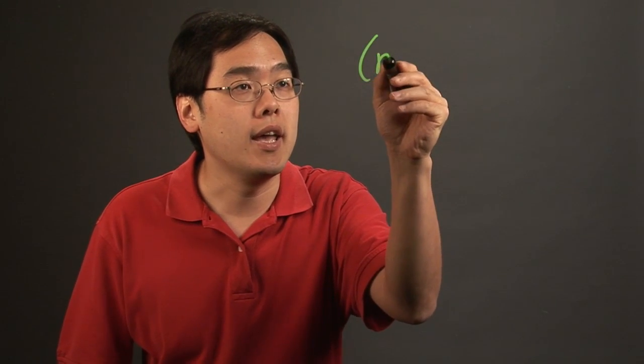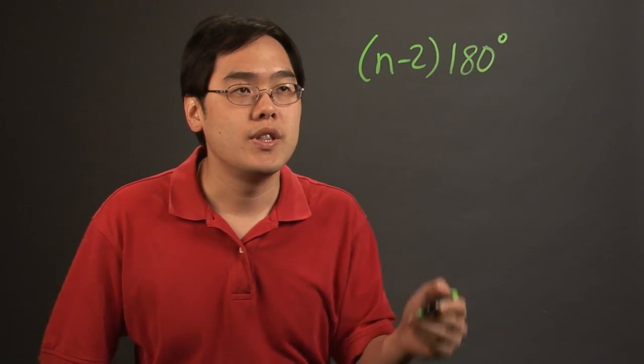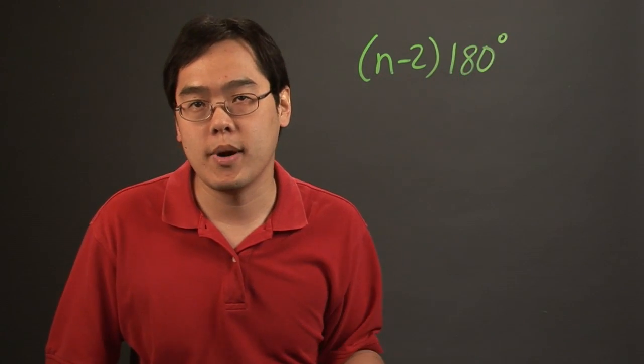Now before you do that, the one thing you want to consider is how many degrees this polygon has and there's actually a formula associated with that and it's of the form n minus 2 in parentheses times 180 degrees. So n is the number of sides a polygon has.